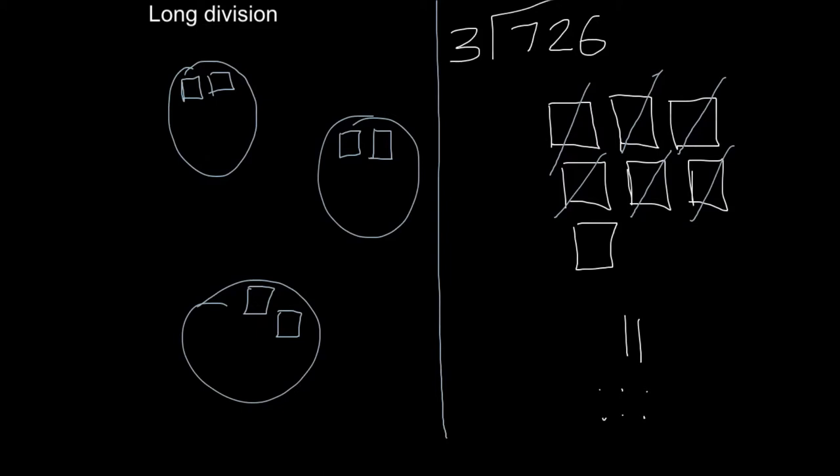What I can do with that hundred block is regroup it into tens. When we regroup a hundred block into tens, we get 10 of them. So I'm going to cross the hundred block out and add my 10 here: 2, 3, 4, 5, 6, 7, 8, 9, 10. I already have two there, so that means I have 12. Now I'm going to place those 12 tens in my groups and cross them off when I place them.